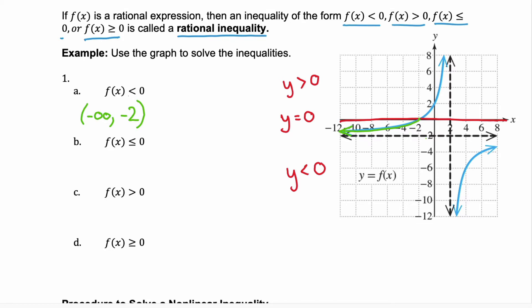Is there any other point at which our graph is below the x-axis? Yes, this other chunk of the graph. Notice that our x values are from 2 — and 2 is not included because 2 is a vertical asymptote — and x goes on through infinity because this right side of the graph is pointing towards infinity.